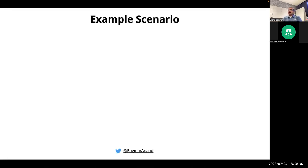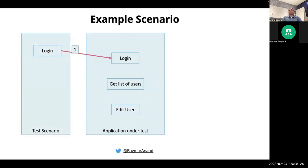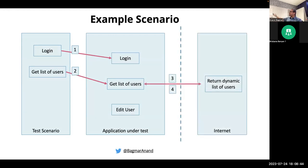I want to start off by showing a few examples of why there is a challenge, and if you have also encountered these challenges in your experience. To show this example, let's quickly understand the high-level architecture — the functionality, what is expected. So if you are testing an application which requires you to log in, get a list of users, and then you want to edit the user details — very simple functionality.